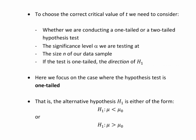And with a one-tailed test, H1 could have one of these forms. It might be that we're hypothesizing that the mean mu is less than some number, or it might be that we're hypothesizing that the mean mu is greater than some number.